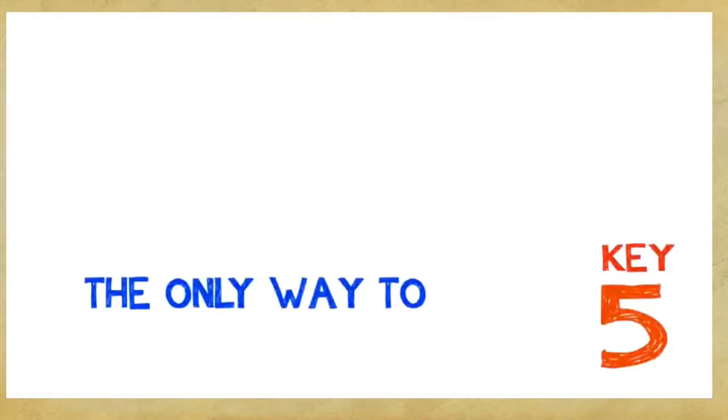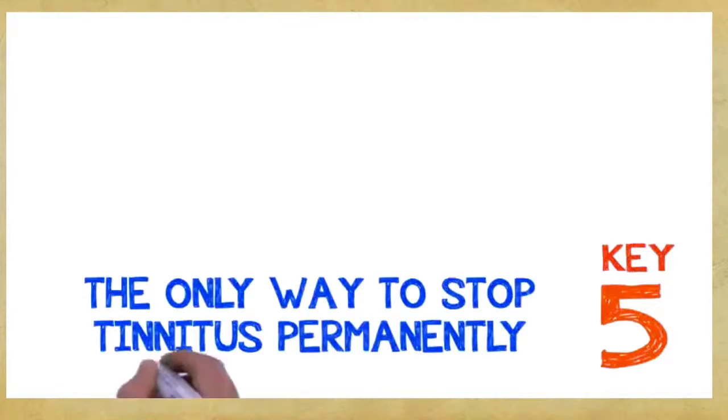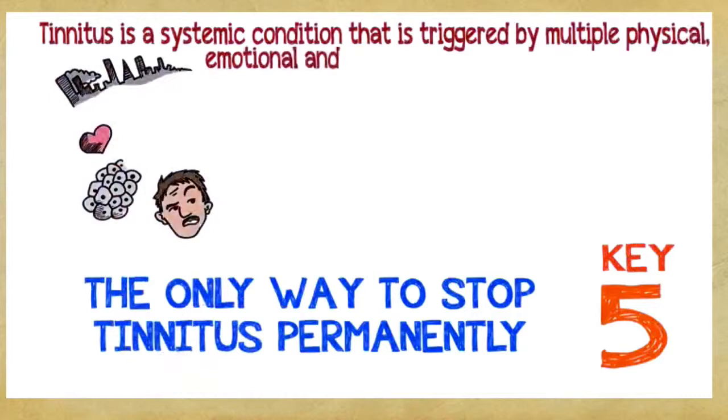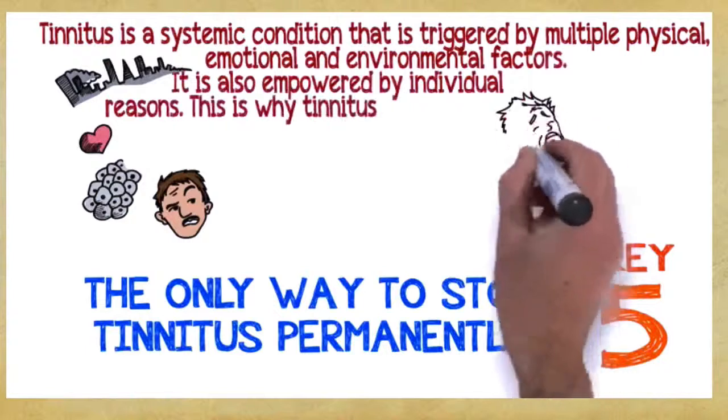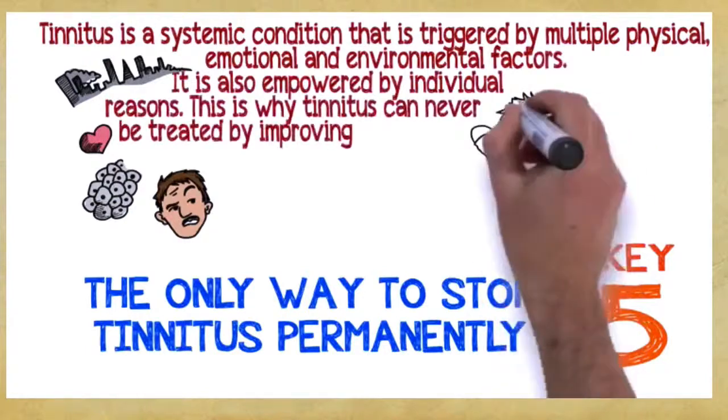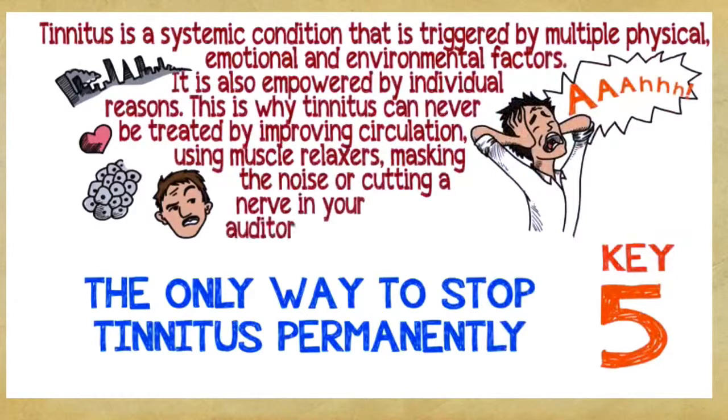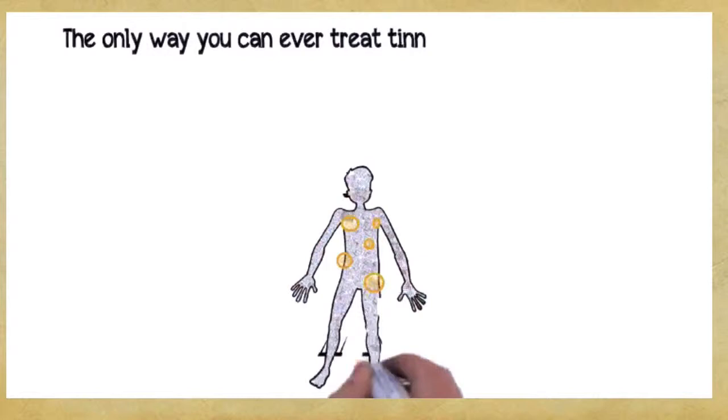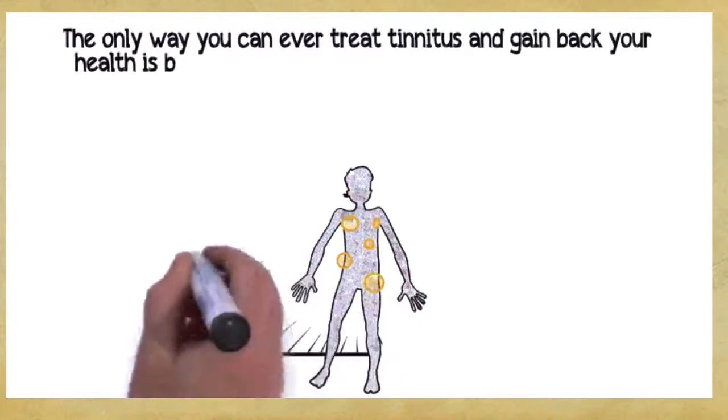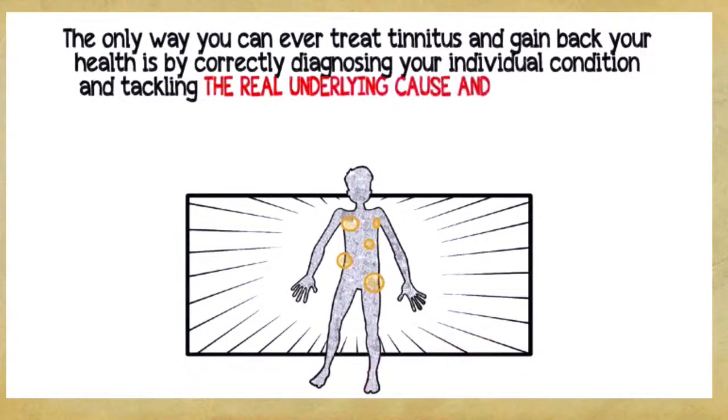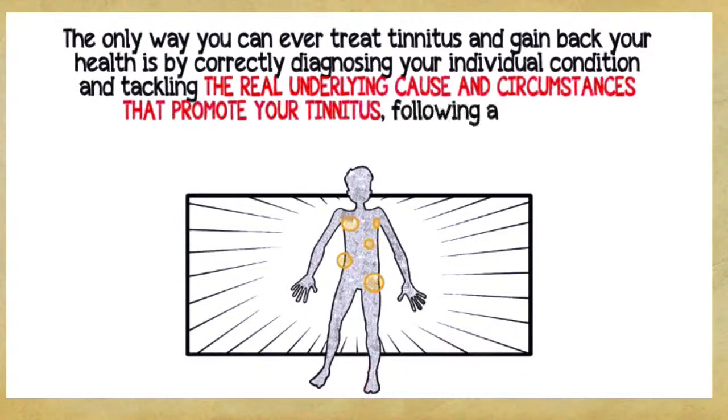Key number five: the only way to stop tinnitus permanently. Tinnitus is a systemic condition that is triggered by multiple physical, emotional, and environmental factors. It's also empowered by individual reasons. This is why tinnitus can never be treated by improving circulation, using muscle relaxers, masking the noise, or cutting a nerve in your auditory system. The only way you can ever treat tinnitus and gain back your health is by correctly diagnosing your individual condition and tackling the real underlying cause, following a complete, multi-dimensional, holistic program.